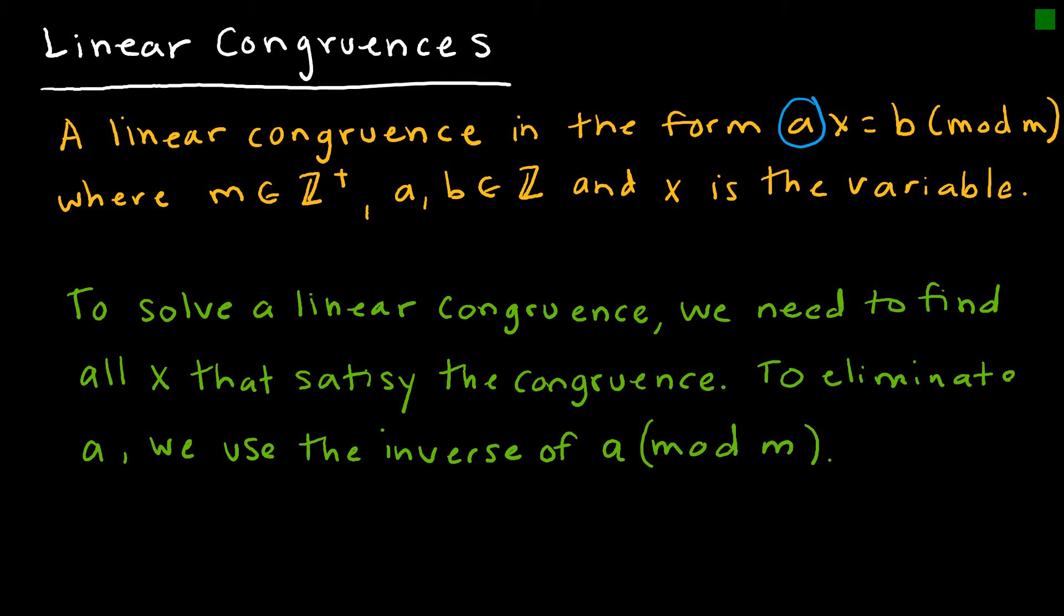So we're saying mod M, A and B are integers, and X is the variable. And to solve this, essentially what I'm looking for is all of the X's that will satisfy the congruence. Just like in a normal equation, if I said 2X equals 8, we would be solving to find that X is 4, and that would be the only X that satisfies the equation.